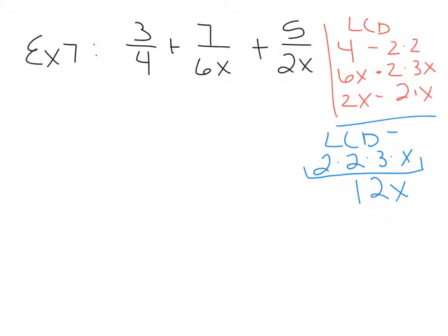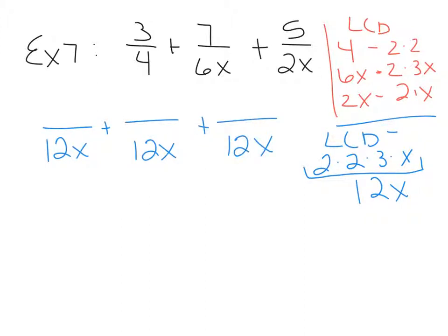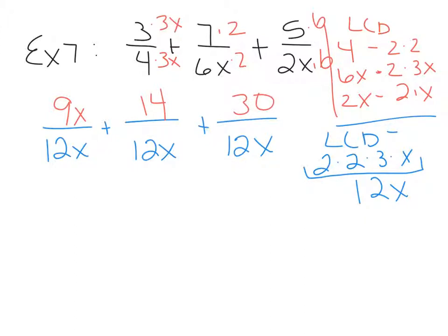We're going to change all three of these fractions to a denominator of 12x. It's a matter of multiplication. 4 times what makes 12x? 4 times 3x gives 12x, so multiply the numerator by 3x to get 9x. 6x times 2 makes 12x, so 7 times 2 gives 14 in the numerator. 2x times 6 makes 12x, so 5 times 6 gives 30 in the numerator. These all cancel back, but you don't want to cancel at this point because you'll be going backwards — you want the denominators all the same.